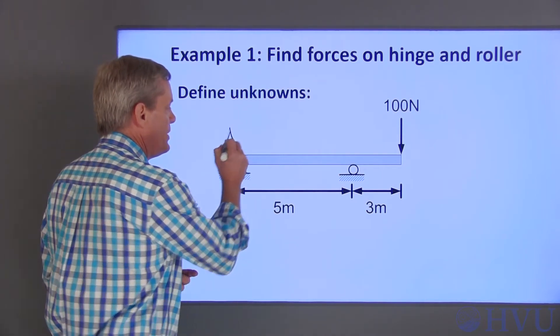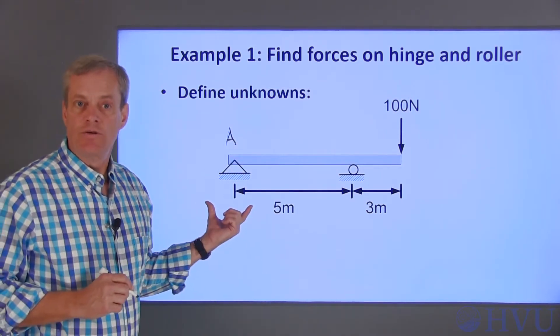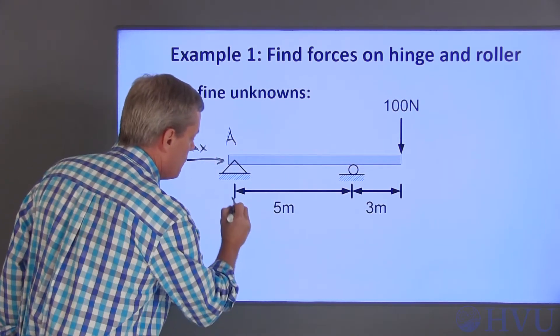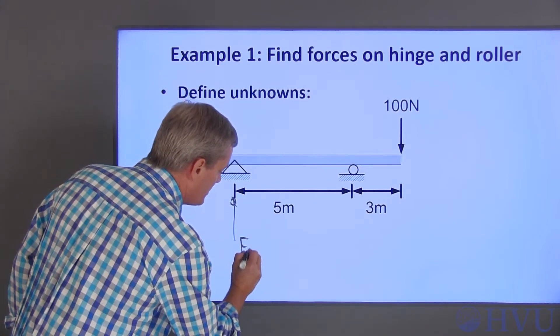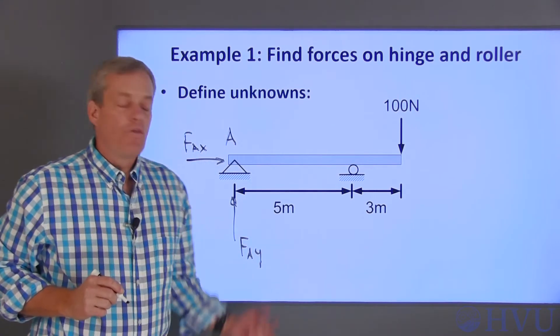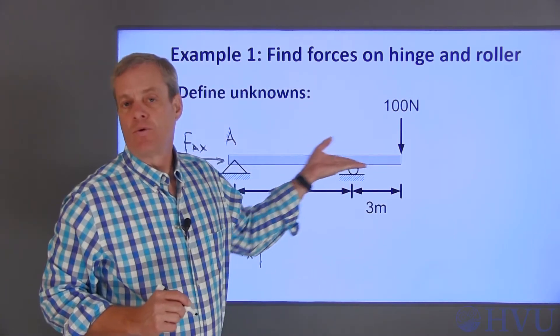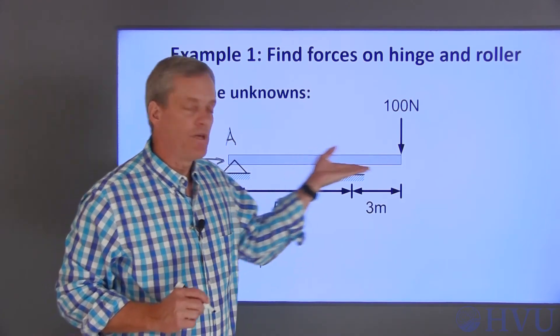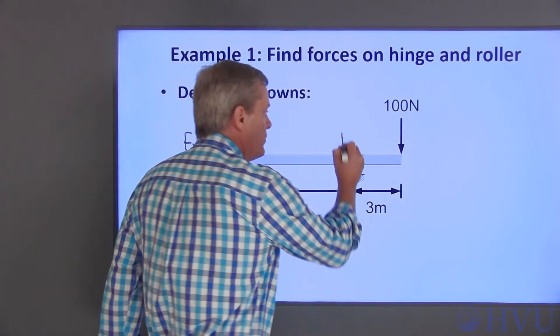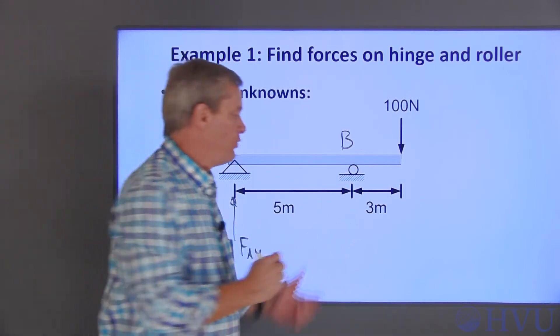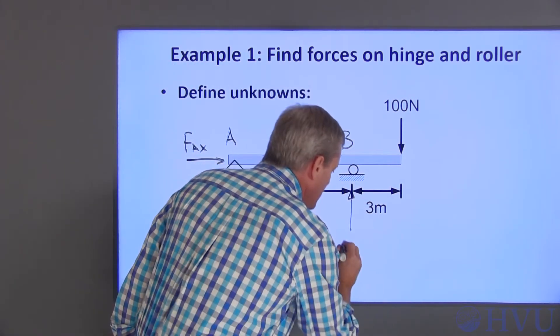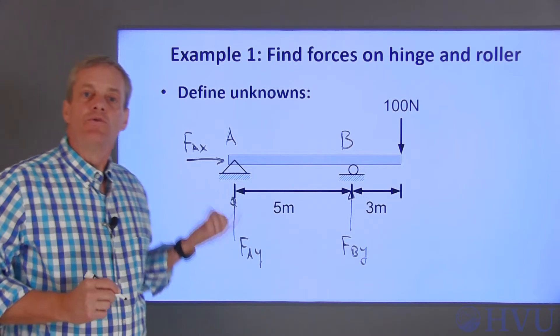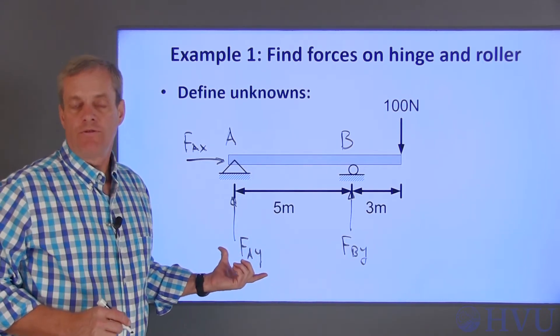I'll call this end point A and I'll define two unknown forces in two directions. FAX will be the horizontal force and FAY will be the vertical force at point A. The roller will support a vertical force, but not a horizontal force. This is similar to riding a skateboard. It will hold you up, but it won't keep you from moving sideways. I'll call this point B and I'll define a vertical force FBY at this point. The system has three unknowns, so next I need to write three equations to solve for those unknowns.